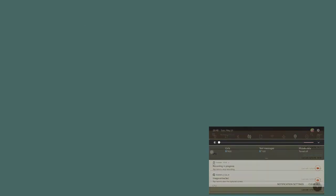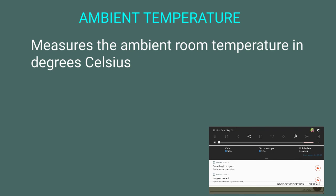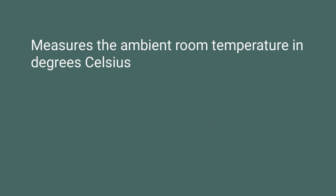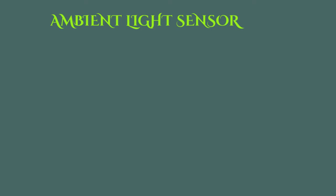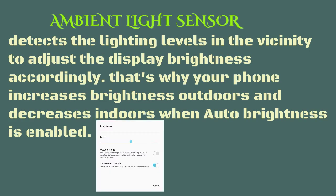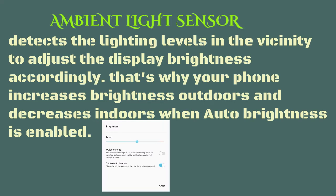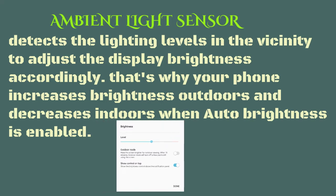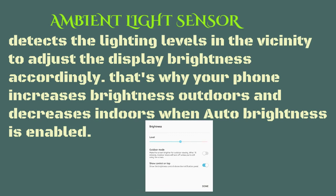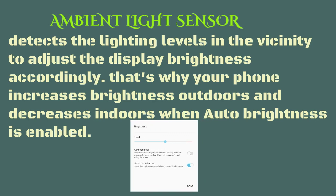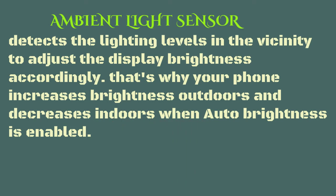Ambient Temperature measures the ambient room temperature in degrees Celsius. The ambient light sensor detects the lighting levels in the vicinity to adjust the display brightness accordingly. That's why your phone increases brightness outdoors and decreases indoors when auto brightness is enabled.